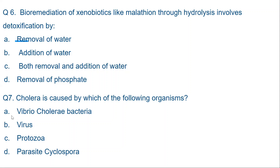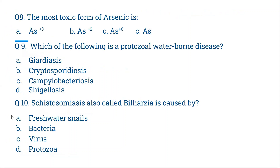Question 8: The most toxic form of arsenic is? Options: arsenic 3+, arsenic 2+, arsenic 6+, or atomic arsenic. The correct option is arsenic 3+ (trivalent arsenic/trioxide). This is the most toxic form of arsenic. Please remember this.